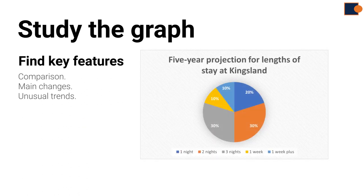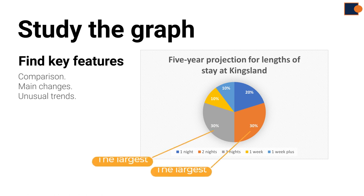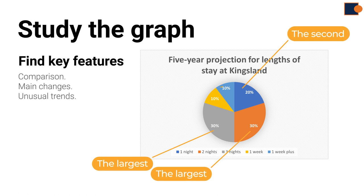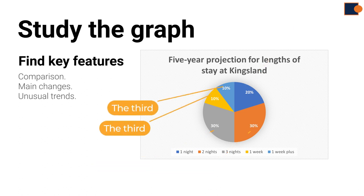Now let's take a look at the next pie chart, which is Kingsland after five years. Here you can see the biggest slice of the pie is three nights and two nights stay. The second is one night stay, and the third is week or more staying periods.